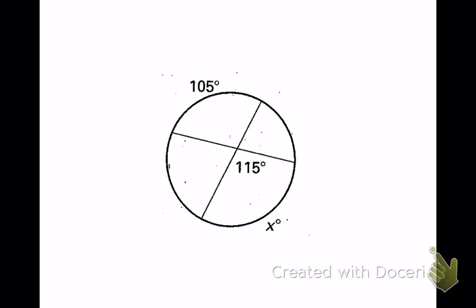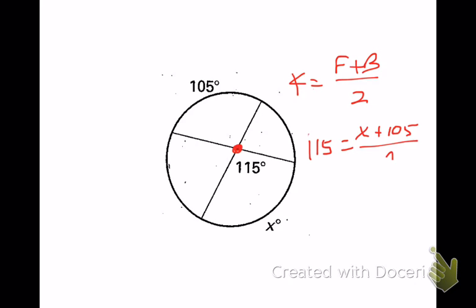Try the next one. The vertex is inside, not at the center, so the formula is front plus back divided by two. Here we know the angle is 115. The front arc is x, the back arc is 105, divided by 2. Multiply both sides by 2: 230 equals x plus 105. Subtract 105 and you get x equals 125.